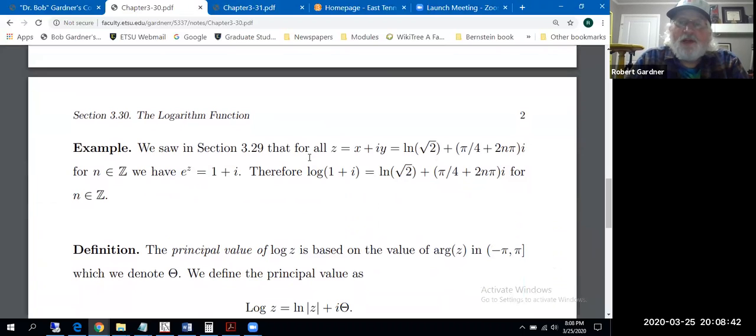Okay. One of the examples from the previous section dealt with 1 plus i. We found all z such that e to the z equals 1 plus i. We found that such z values would be of the form natural log of the square root of 2 plus π/4 plus 2nπ for the imaginary part times i. n being an arbitrary integer. So no problem. All numbers of this form where n is an integer satisfy this equation. e to the z equals 1 plus i. So in terms of this log function we just defined, quote unquote function, log(1 + i) is the natural log of the square root of 2 plus this argument part. So this would be little a argument of the 1 plus i complex number.